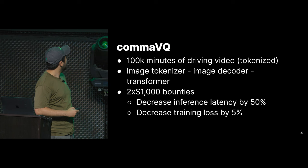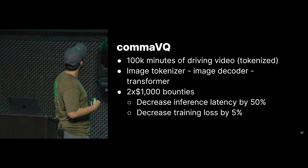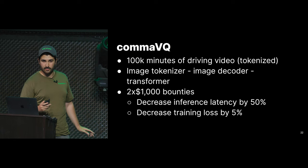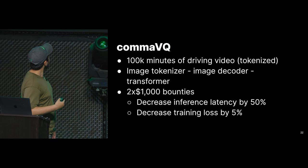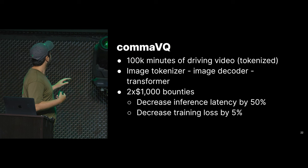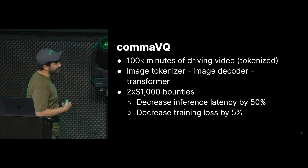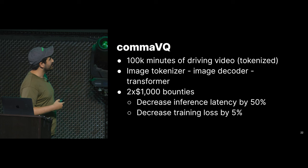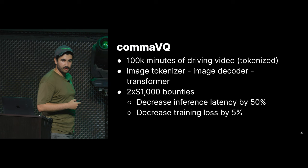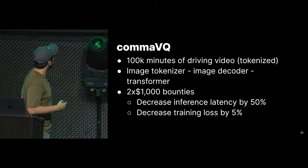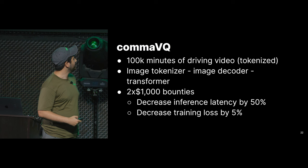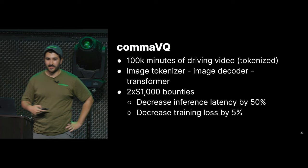We open sourced all of this: a dataset of 100,000 minutes of driving, tokenized using the tokenizer I showed. We open sourced the image tokenizer and decoder, and also a transformer very similar to the one I'm showing today that can generate rollouts like these. We also have two $1,000 bounties: improve inference latency by 50% to get $1,000, or decrease training loss by 5% for another $1,000. Currently the model runs at 2 FPS and we want to make it much faster.